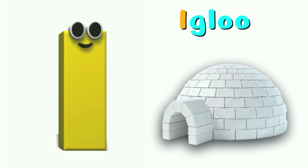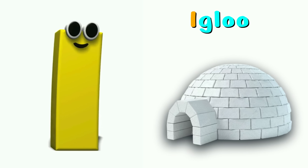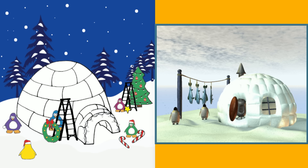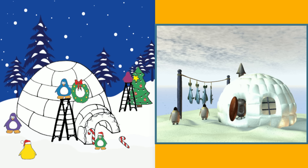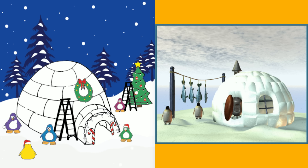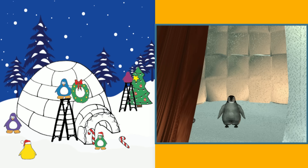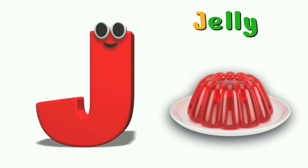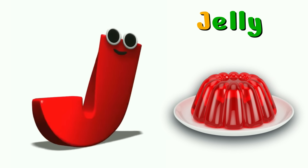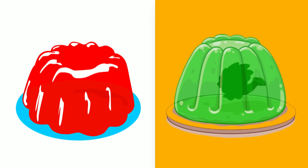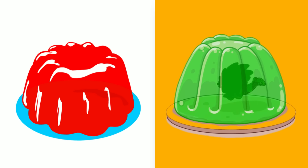I is for Igloo. I, Igloo, I, Igloo, I, Igloo. J is for Jelly. J, Jelly, J, Jelly, J, Jelly.